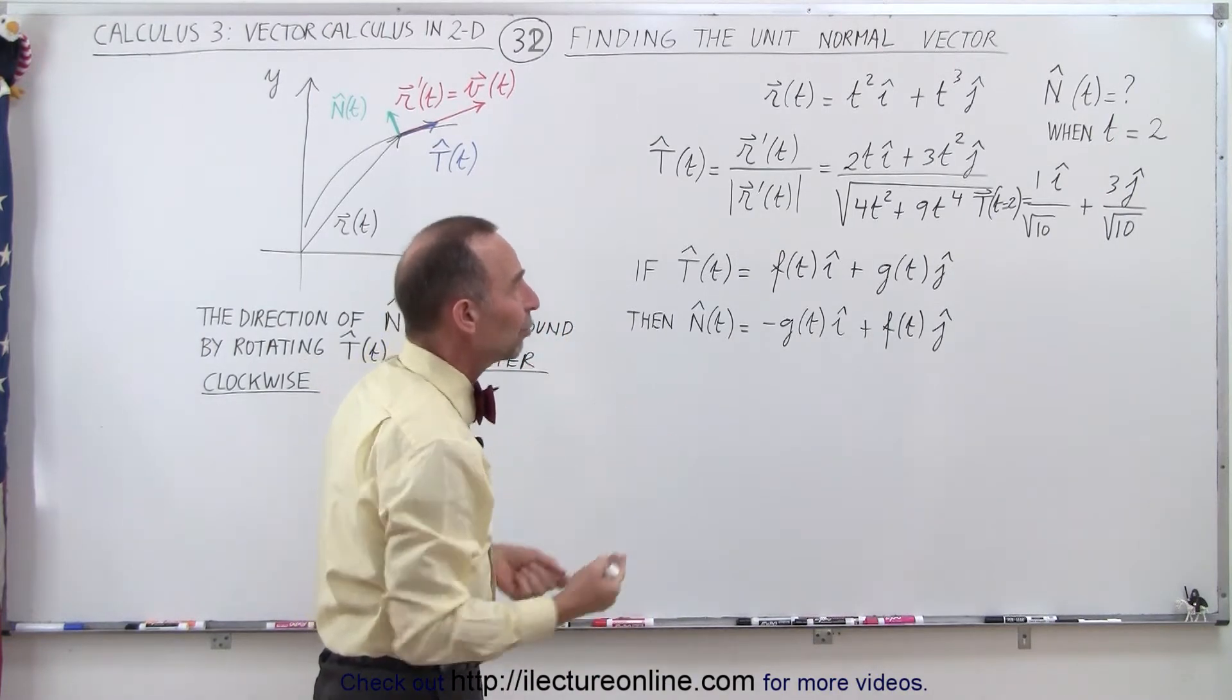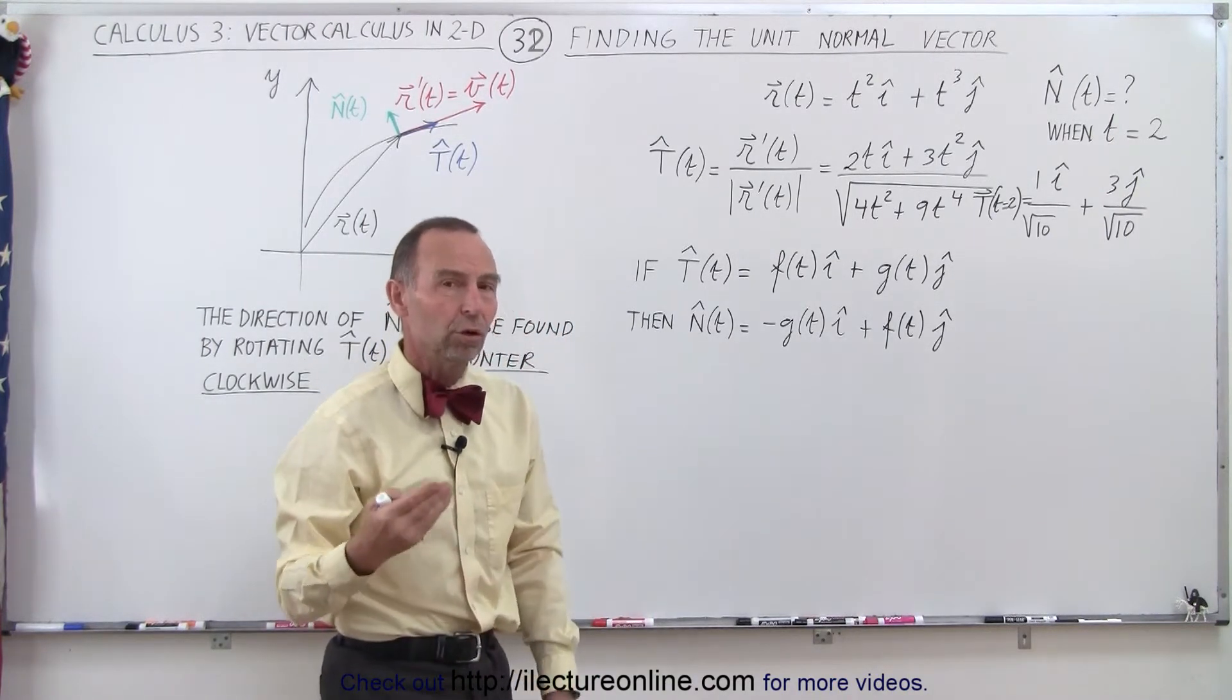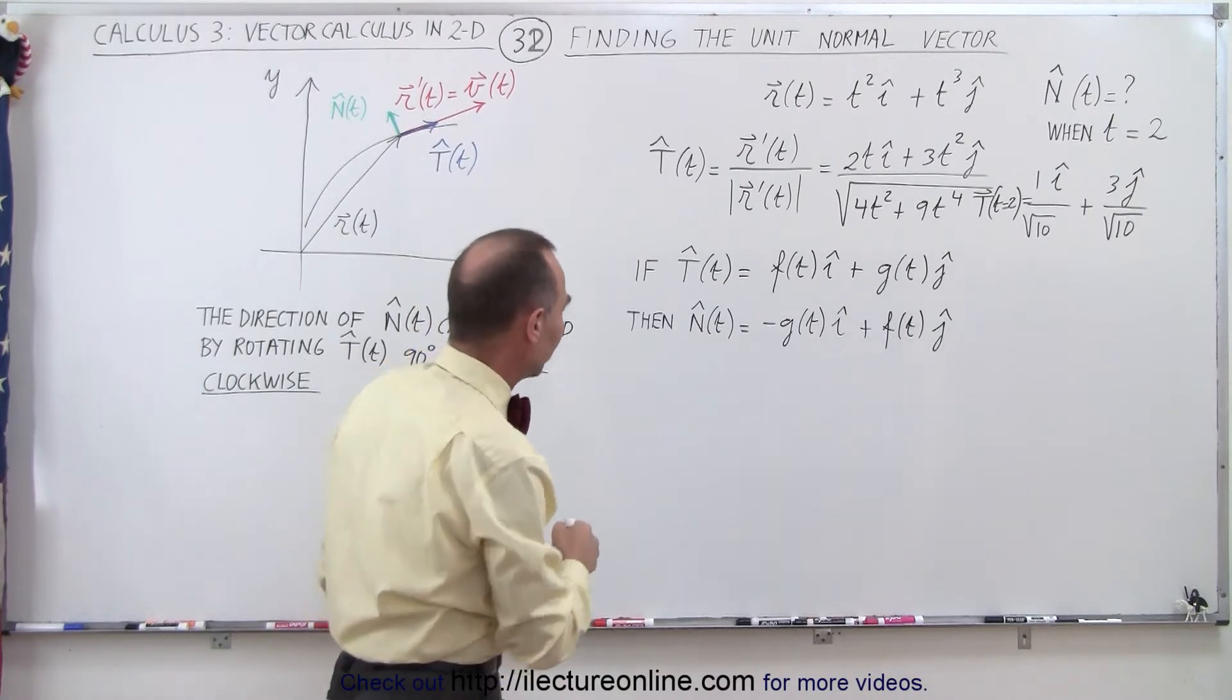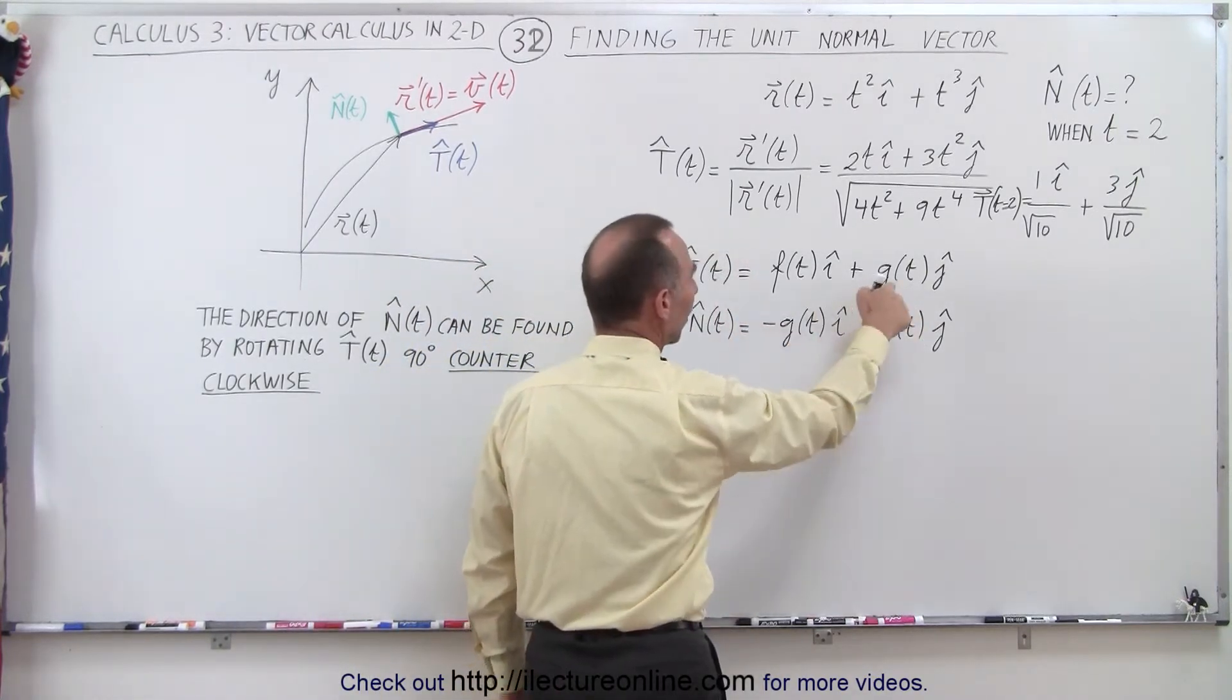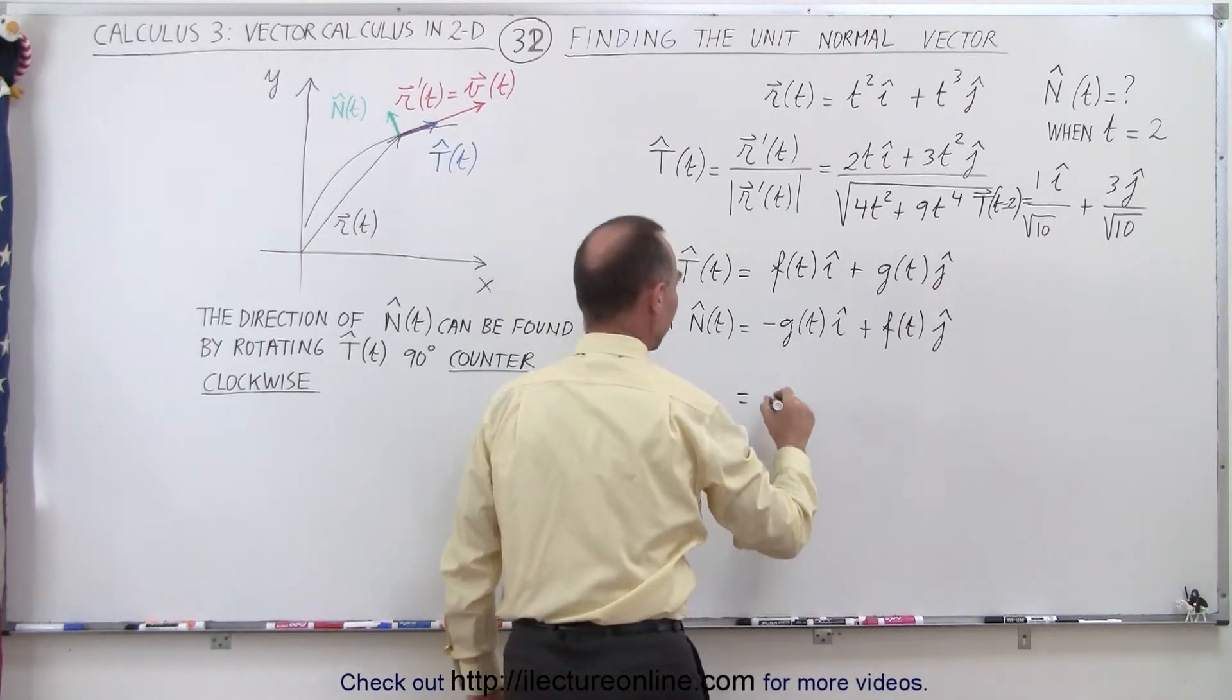We're going to take that same solution and turn it into the unit normal vector. So this equals the negative of this function, the negative of 3 over the square root of 10.